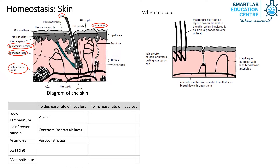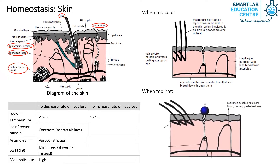and less heat is lost. Additionally, the person would also start shivering. When it is too hot, the temperature receptors detect a rise in temperature. The hypothalamus starts its cooling mechanism to bring the body temperature back to normal.